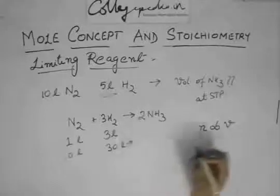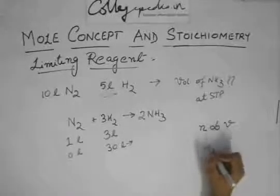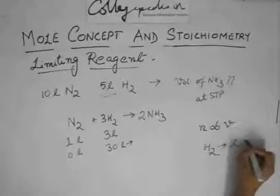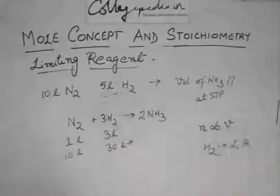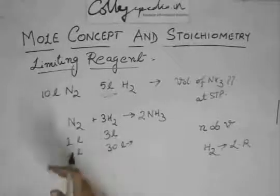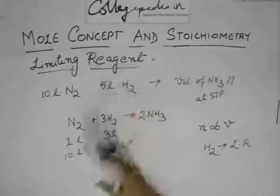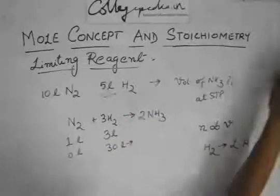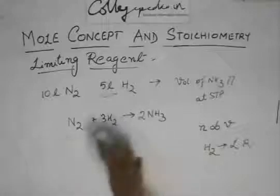Which will be the limiting reagent? Hydrogen is the limiting reagent because only 5 liters is available and 10 liters, if it wants to react, it needs 30 liters, which is not available.